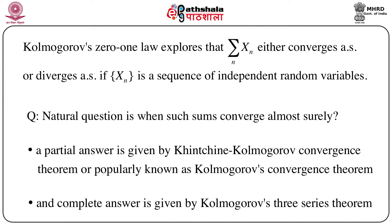A partial answer to this question is given by what is known as the Khinchin–Kolmogorov convergence theorem, or more popularly simply Kolmogorov's convergence theorem, and the complete answer is given by Kolmogorov's three series theorem. We will discuss both: Kolmogorov's convergence theorem and Kolmogorov's three series theorem, in order to explore under what conditions the sum of variables summation x_n converges almost surely.